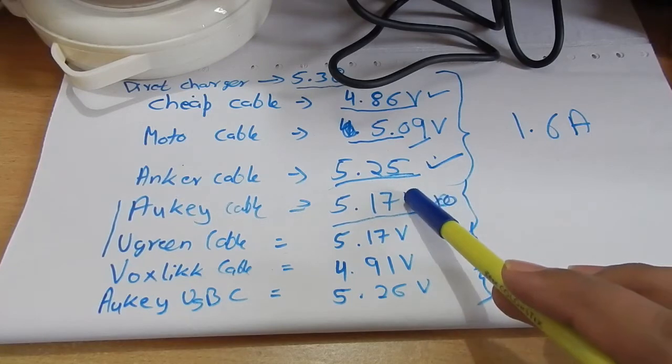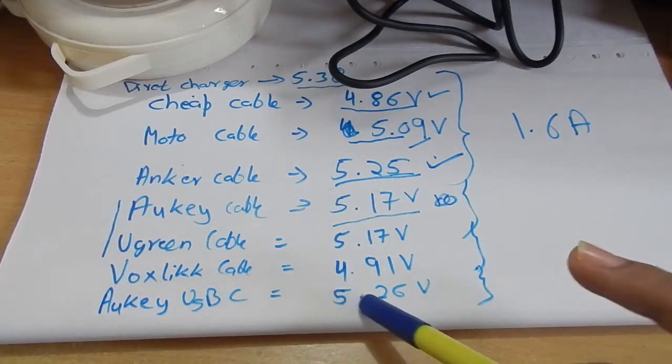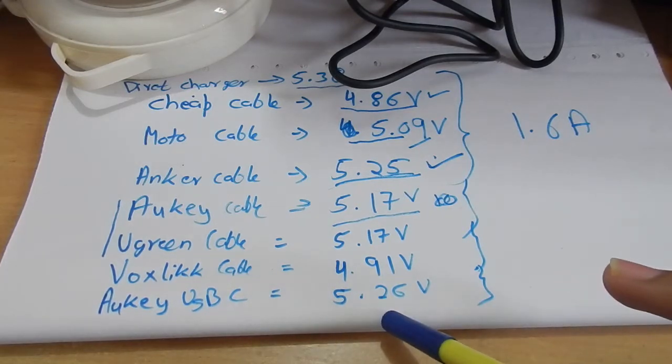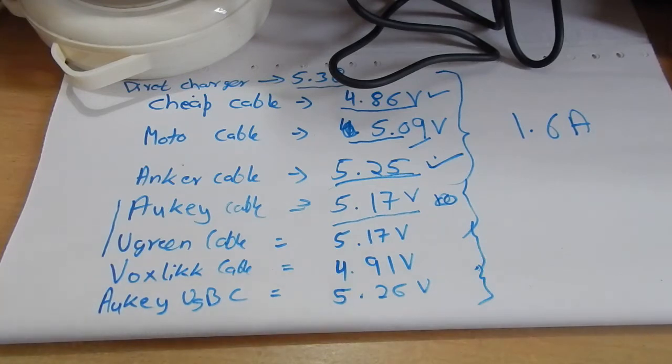If you compare the Auki micro USB cable to the Auki USB-C cable we can see a very huge difference that we are getting 5.26 volt which is very impressive. That's why new smartphones are switching to USB-C.